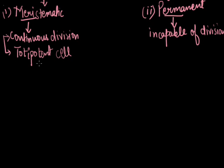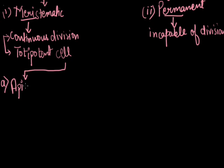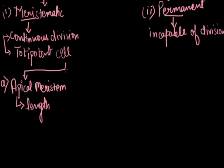On this basis, meristematic tissues are of three types. The first is the apical meristem. Cells which are present at the apex or tip of the stem are known as the apical meristem, and they are responsible for increasing the length of the plant.